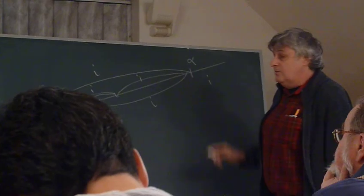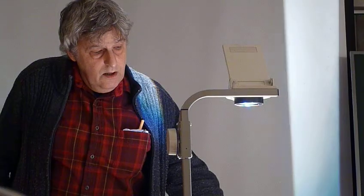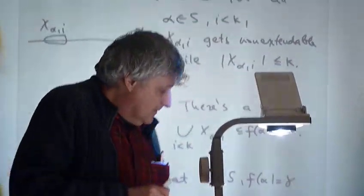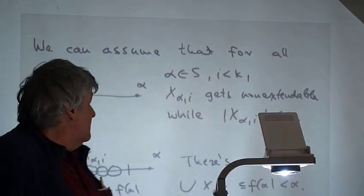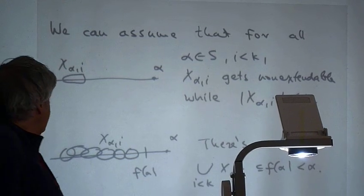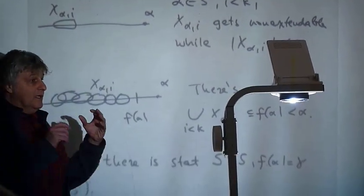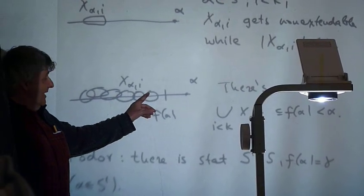So we can assume that we got stuck at some step before kappa plus for every alpha in S and every color i less than kappa. So for every alpha, we have a bunch of unextendable sets, one for each i less than kappa.